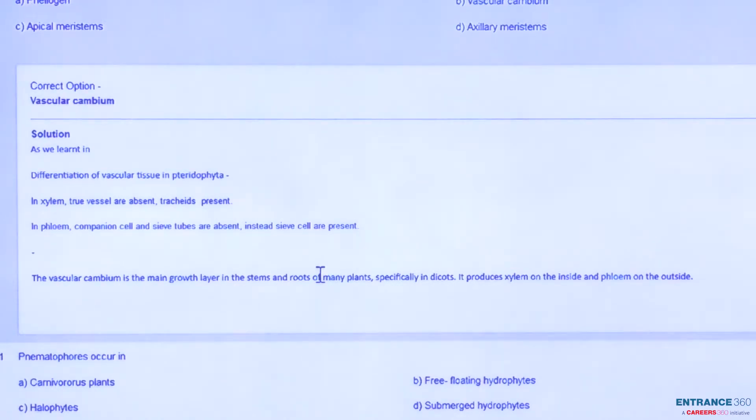In each vascular bundle, the xylem and phloem are separated by a substance called vascular cambium. This vascular cambium produces new xylem and phloem cells, which are forced to grow the vascular bundle. Here you can see it's written the same way in another language.